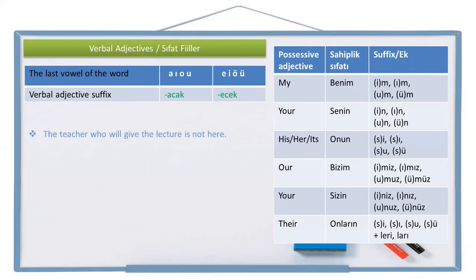Let's see an example: the teacher who will give the lecture is not here. The noun is öğretmen. Give is ver, with the verbal adjective suffix: verecek öğretmen — the teacher who will give. Give what? A specific lecture, so I need the accusative suffix: dersi. Dersi verecek öğretmen — is not here — burada değil.